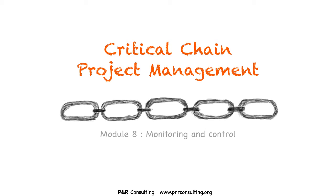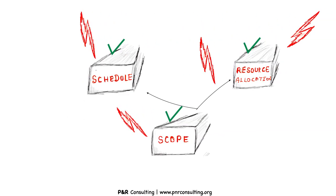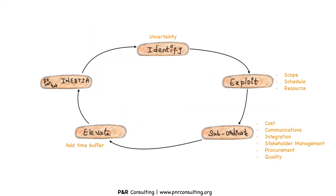Welcome to this module on the CCPM course, wherein we will discuss monitoring and control techniques in project management. In the previous module we learned about freezing the scope, schedule, and resource allocation. Till this point we have covered four steps of the focusing process. The final step is about not being complacent but keep monitoring the project for uncertainties and taking necessary corrective actions.